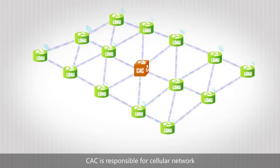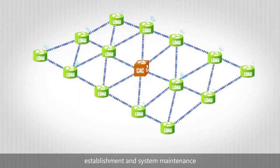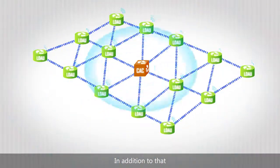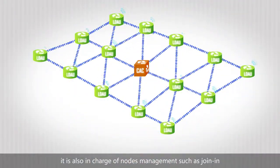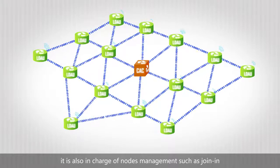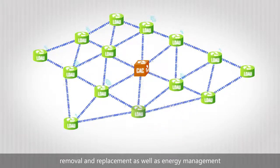CAC is responsible for cellular network establishment and system maintenance. In addition to that, it is also in charge of nodes management, such as join-in, removal and replacement, as well as energy management.